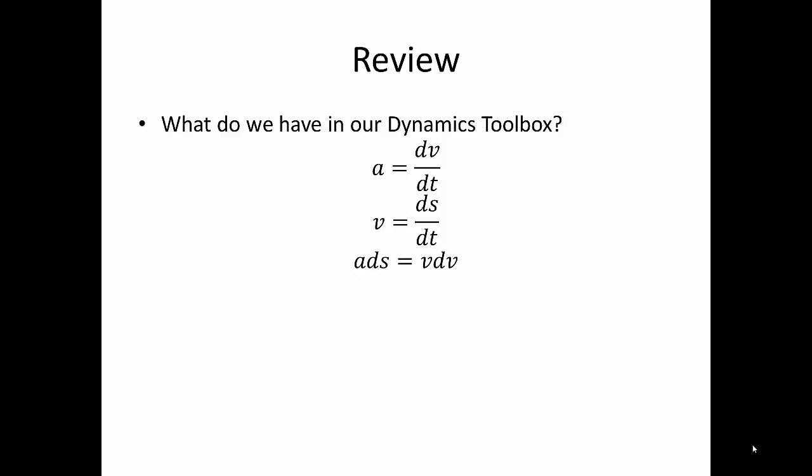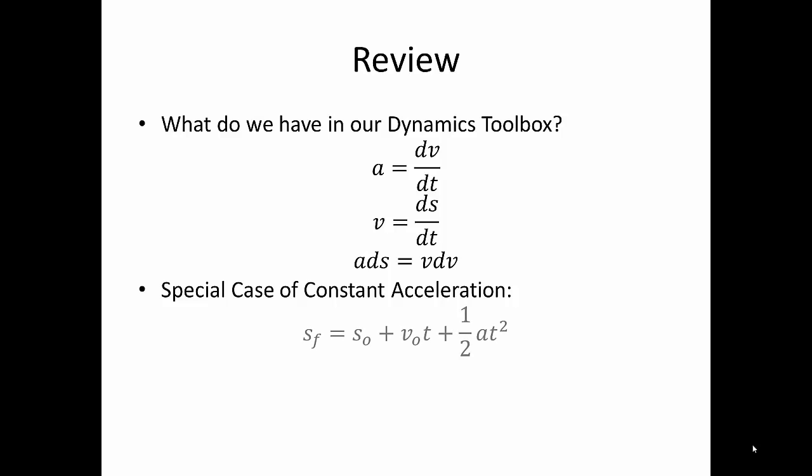We know that a·ds equals v·dv. In the special case of constant acceleration, we know that our final position equals our initial position plus our initial velocity times time plus one-half the acceleration times the time squared. Our final velocity equals our initial velocity plus the acceleration times time. And our final velocity squared equals our initial velocity squared plus 2 times the acceleration times our change in position, or s_f minus s₀.